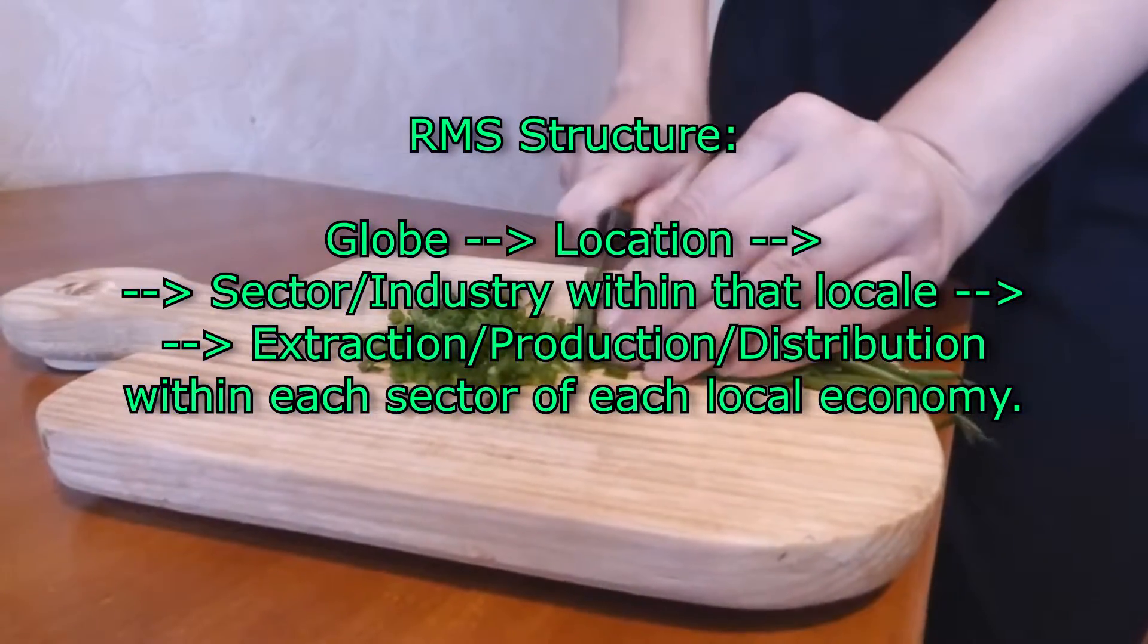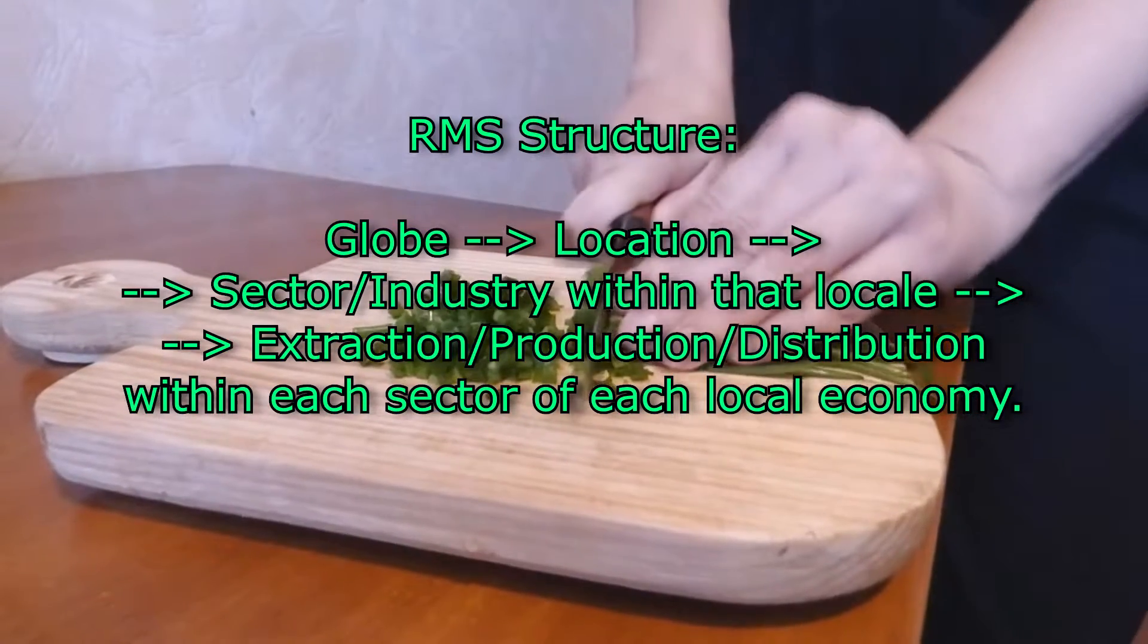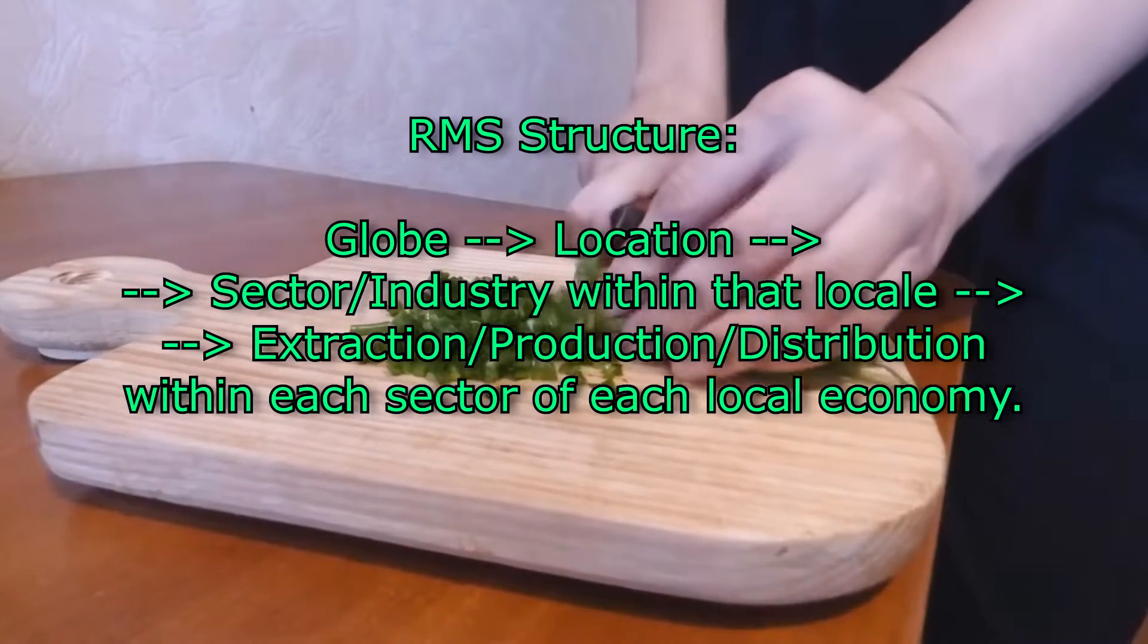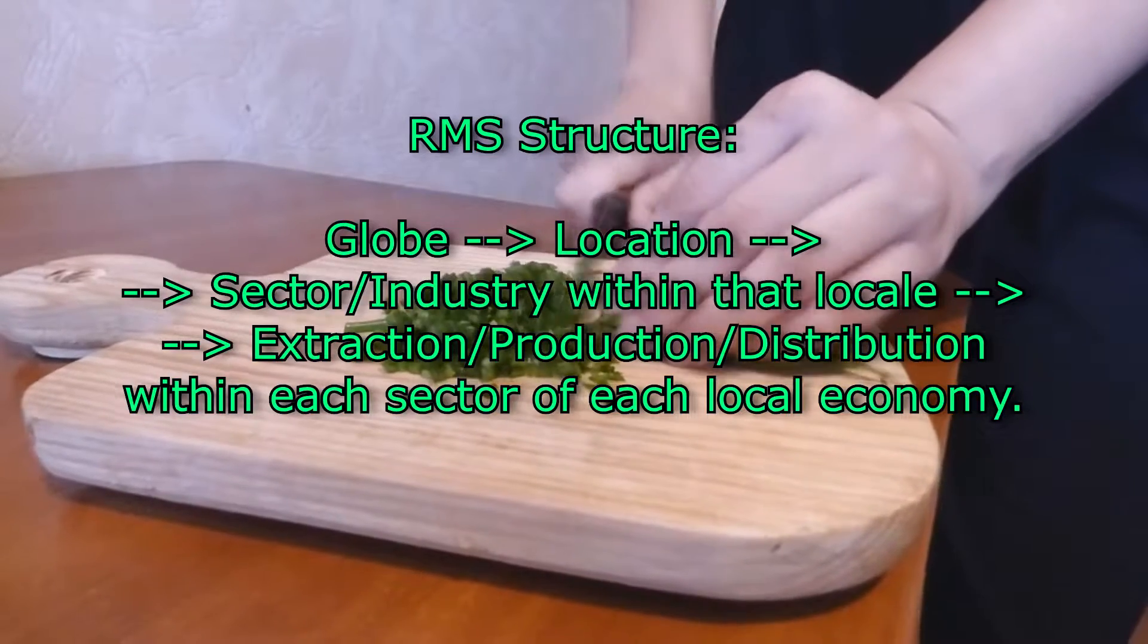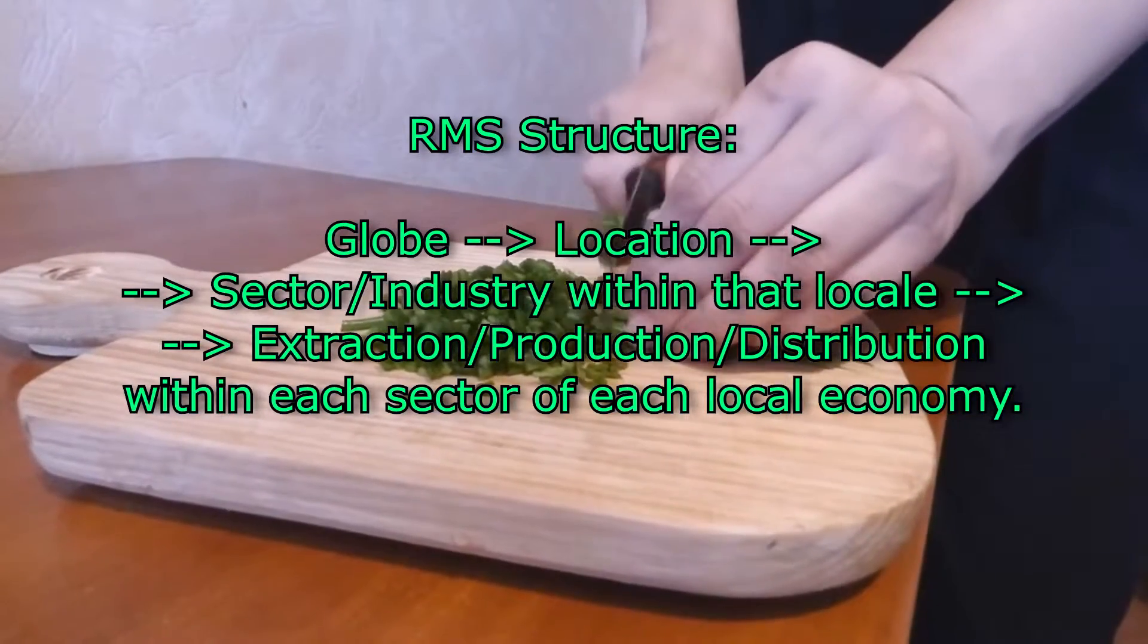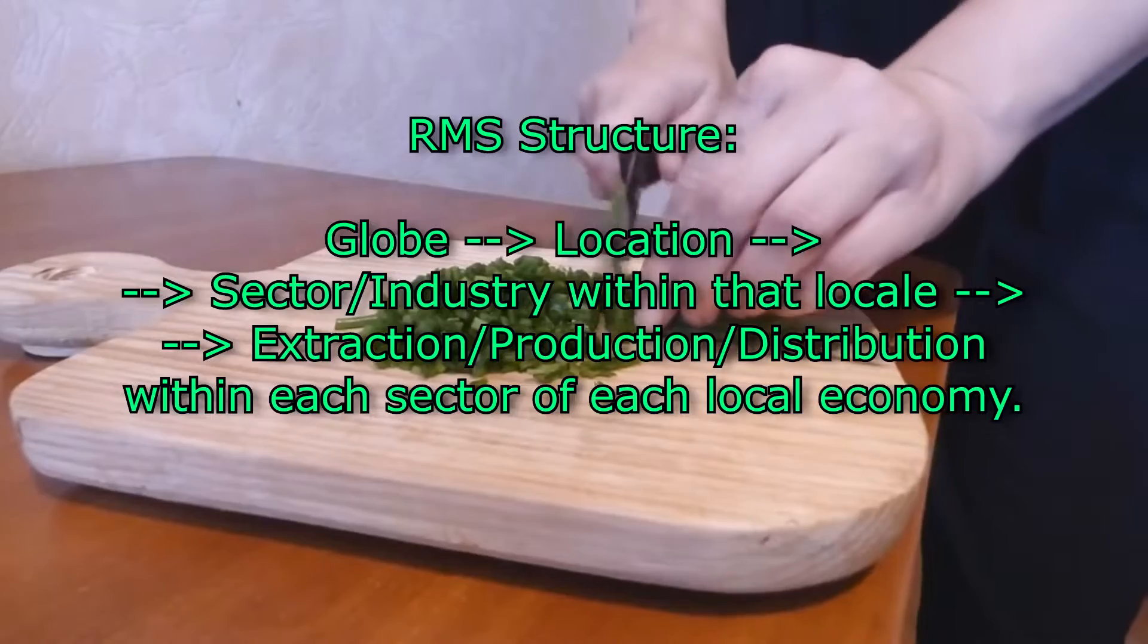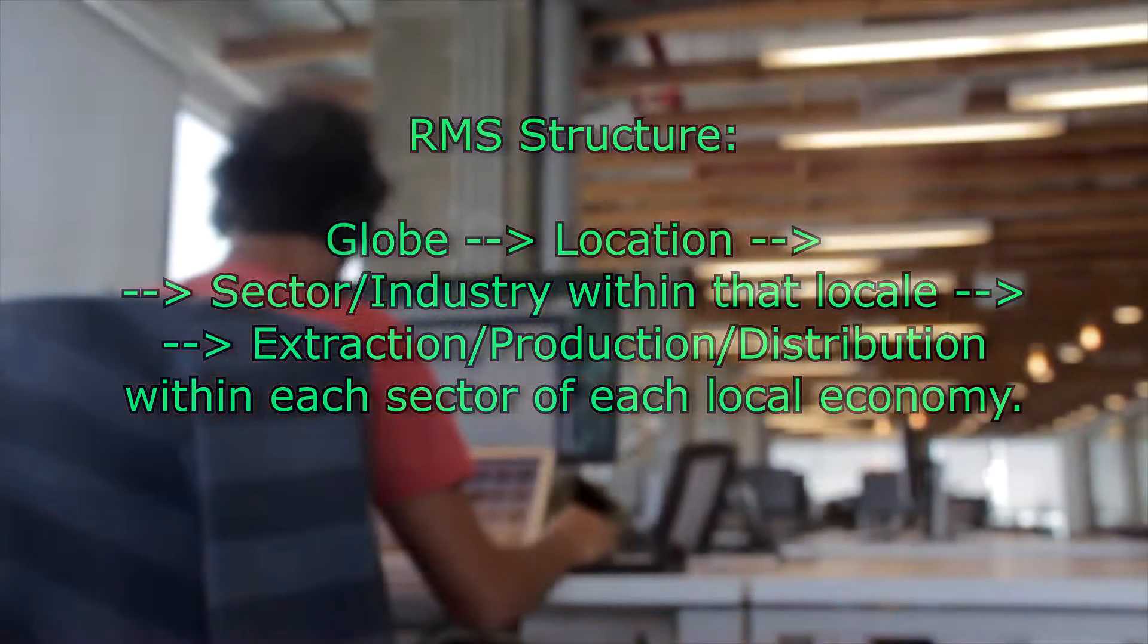This means that each location will have a resource management system that takes care of harvesting the resources needed to make food, producing that food and distributing it to those who demand it. This process would be similar for whatever sectors of a local economy they are applied to.